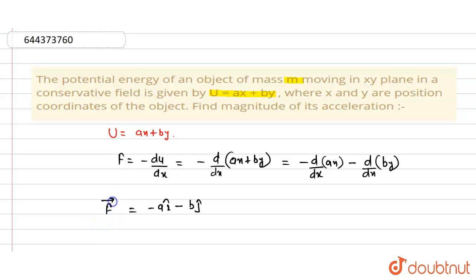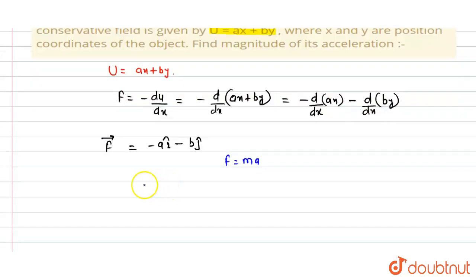We also know that F equals ma, mass into acceleration. We have to find the acceleration, so acceleration a equals F divided by m.